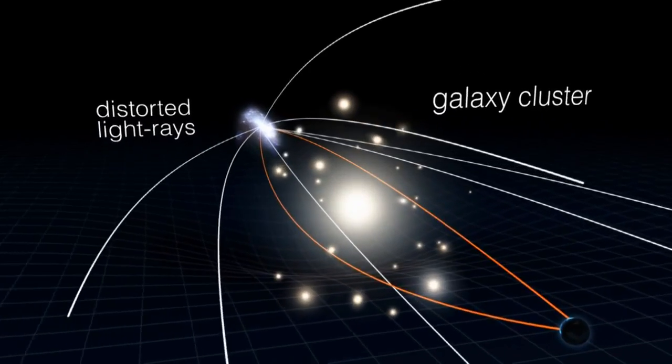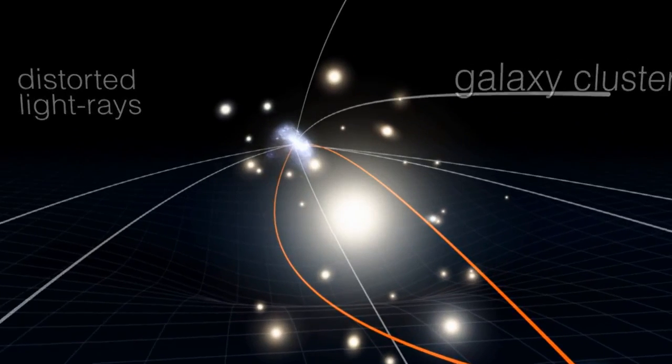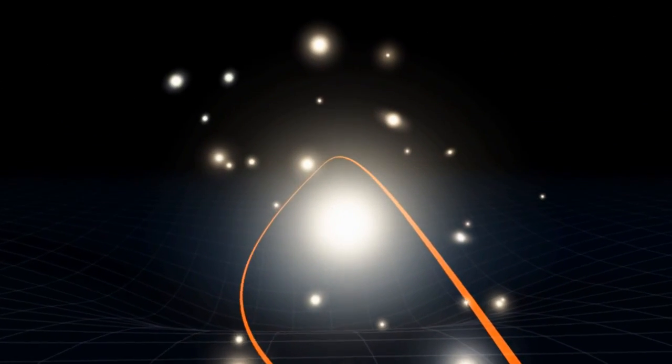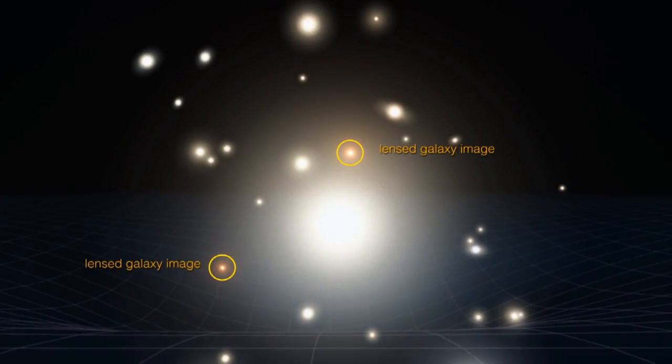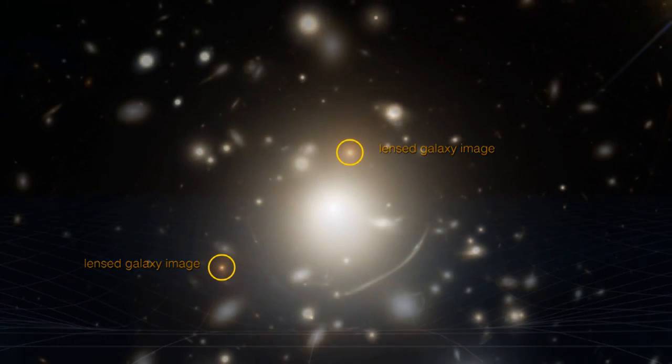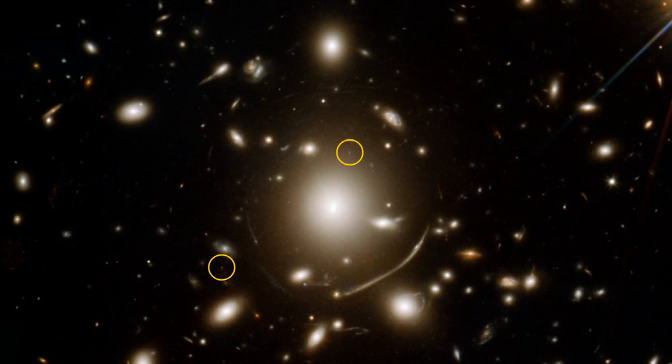As a result, the object, or rather the curved space around it produced by its gravity, acts like a lens - a gravitational lens that deflects light into our telescopes that would have otherwise never made it there.